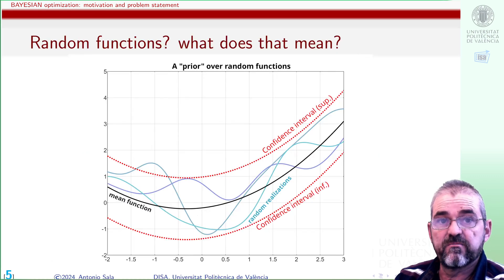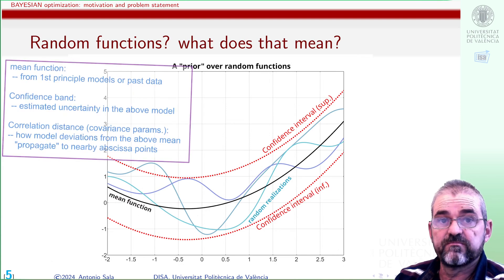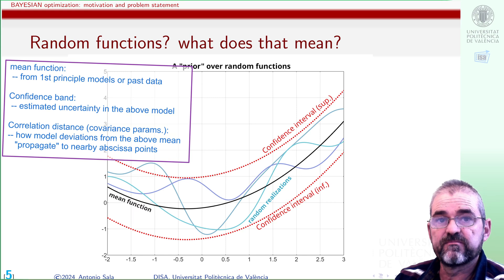The basic Bayesian optimization methodology is setting up a prior with some mean function, uncertainty bands, and covariance encoding the smoothness of the function. The longer the distance in the abscissa axis in which covariance is high, the smoother the function will be.